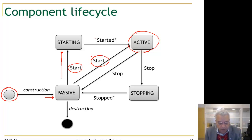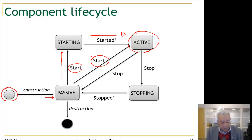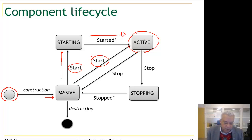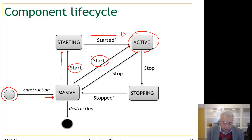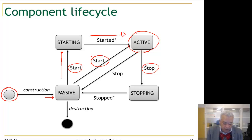The children components will recursively start their own children, and once a child component reaches an active state it signals its parent. Once all children of a component have started, the parent component moves to the active state. In an active state you can immediately stop the component, and if it has sub-children the stop event will also stop them recursively until the component is passivated.